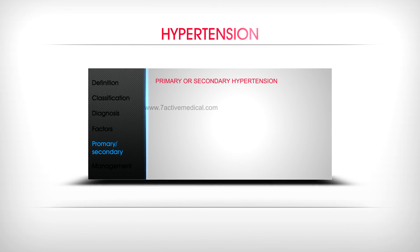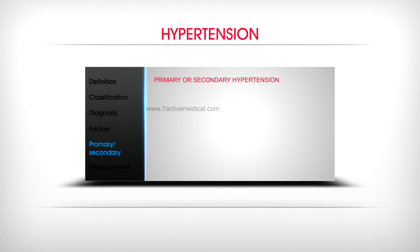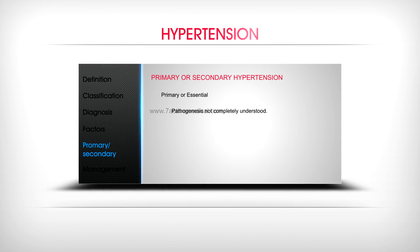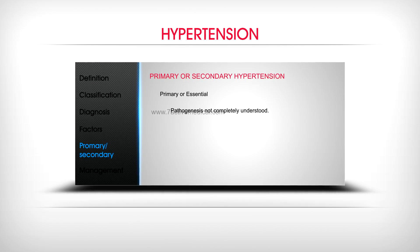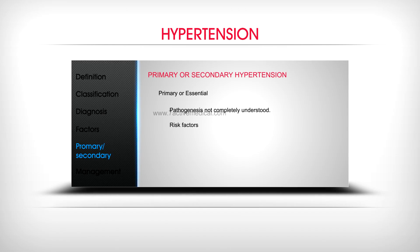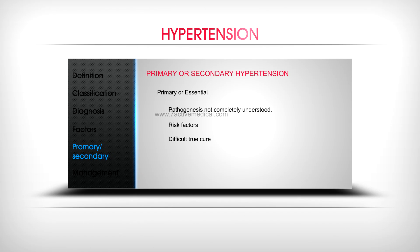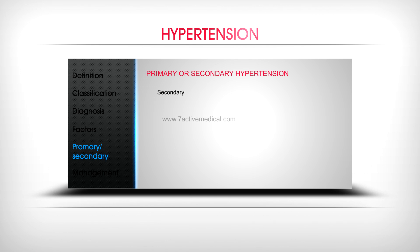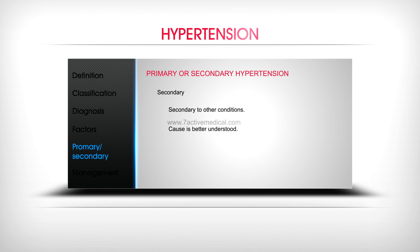Primary or essential hypertension has a pathogenesis that is not completely understood. It has associated risk factors, is difficult to truly cure, and is managed by reducing BP to goal values through lifestyle modification and anti-hypertensive medications. Secondary hypertension is secondary to other conditions, the cause is better understood, and treatment of the underlying condition is the approach.